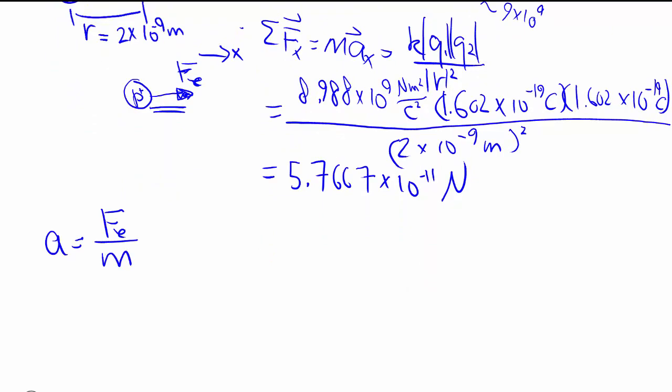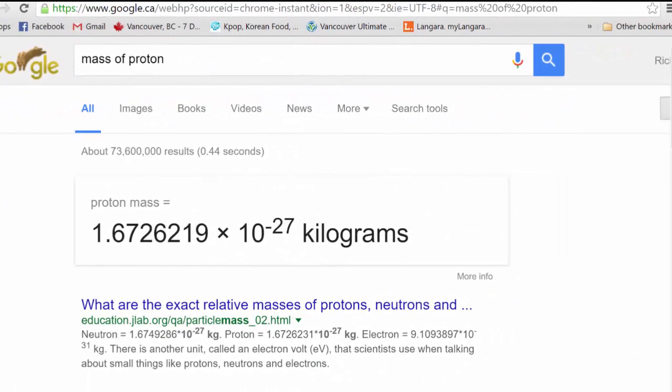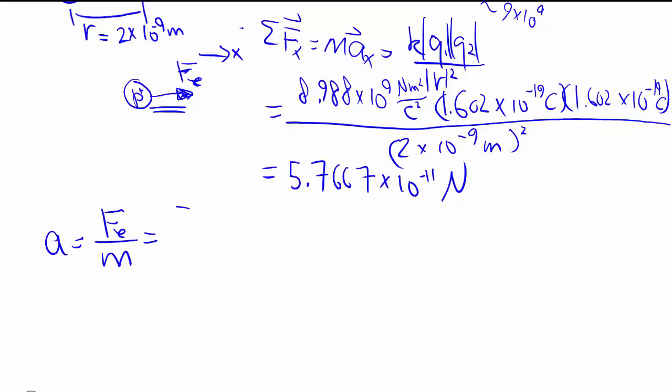But when we work out the acceleration, we have to divide by mass. Well, what's the mass of the proton? Well, Google will tell us. Pretty small mass, no surprise there. And that's what's going to give us a huge acceleration because the mass is so small.